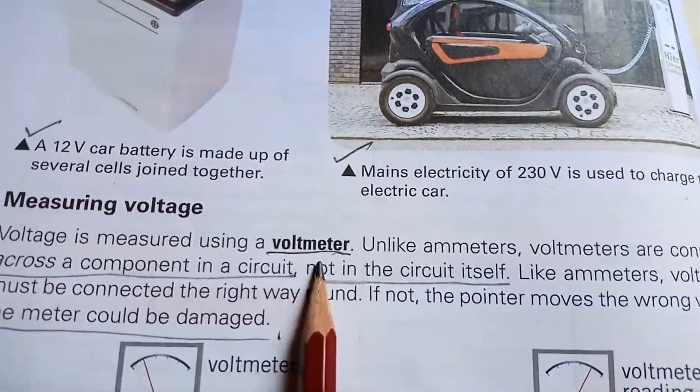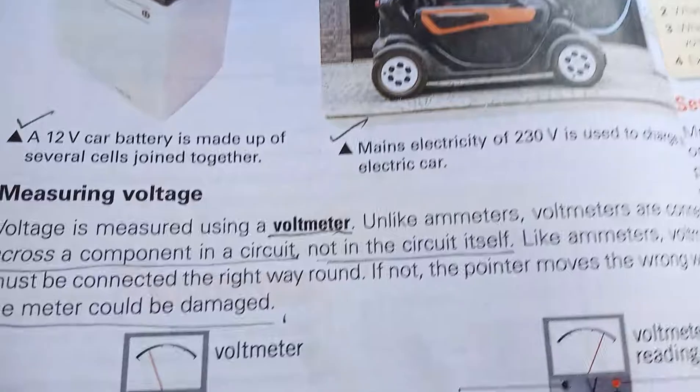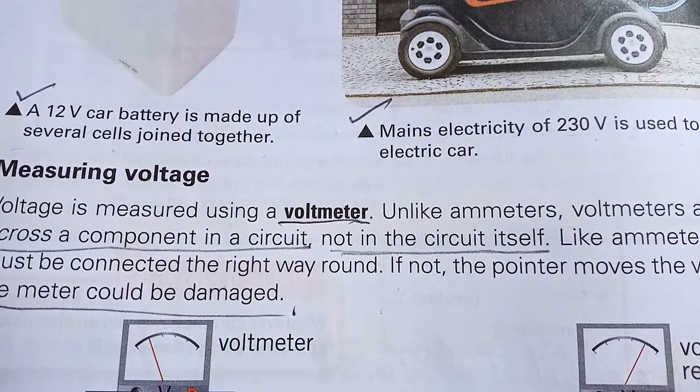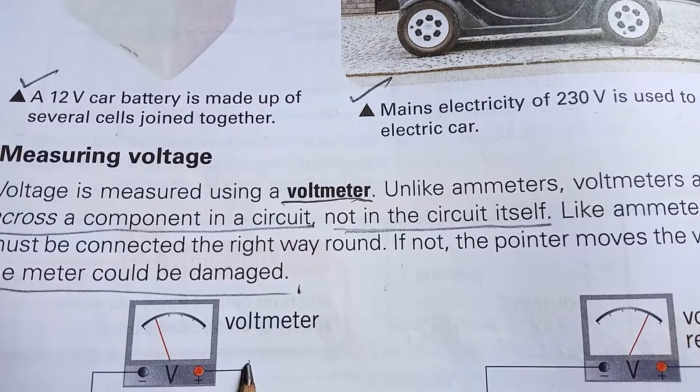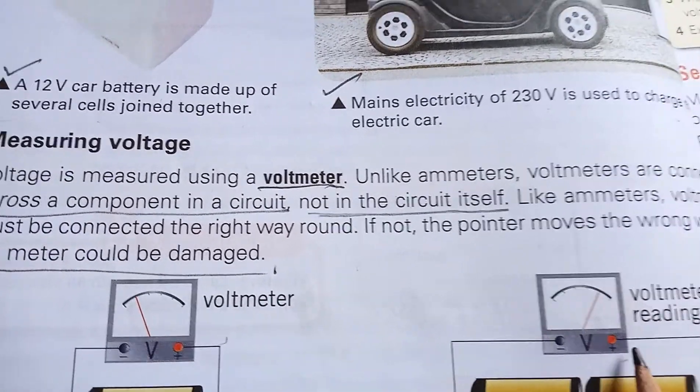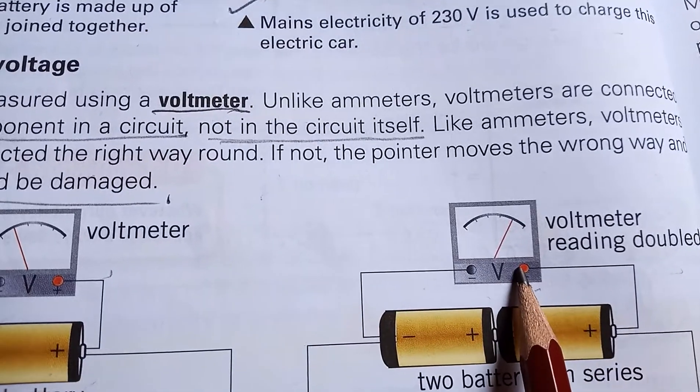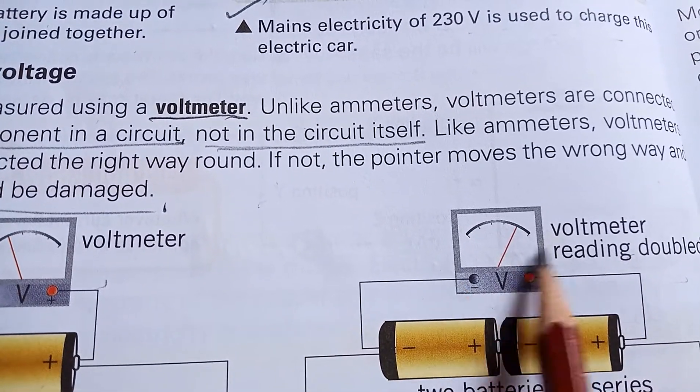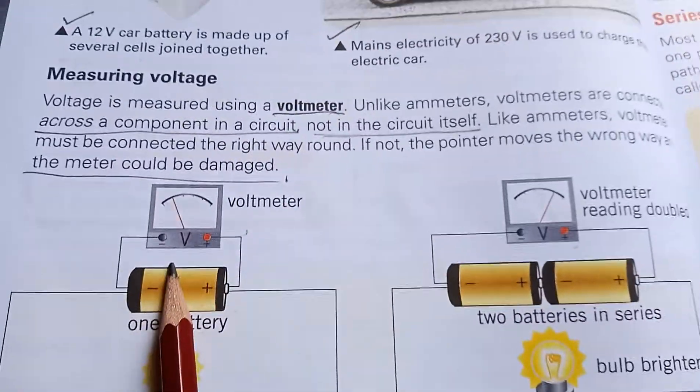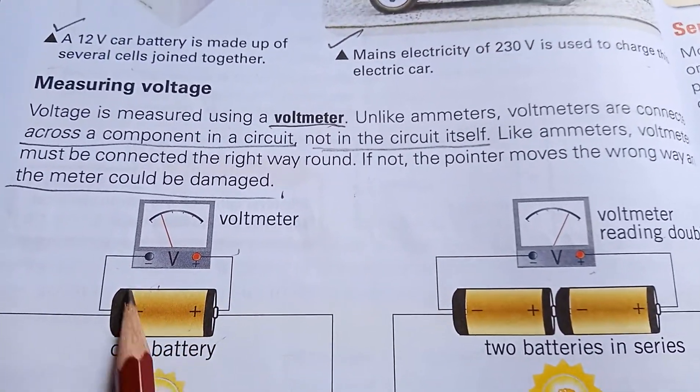How is voltage measured? The voltmeter is connected into the circuit in the correct direction. You can see that the reading of the voltmeter got doubled over here because it is not applied in the right direction, and here it is connected in the right direction so it is working properly.